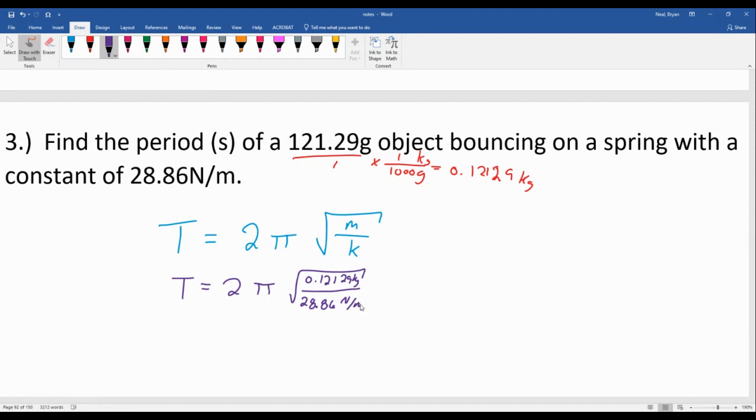Then the meters are going to cancel in the bottom of the meters. We get seconds squared that eventually flip around and get square rooted. So there's a lot going on there, but we do eventually get seconds.